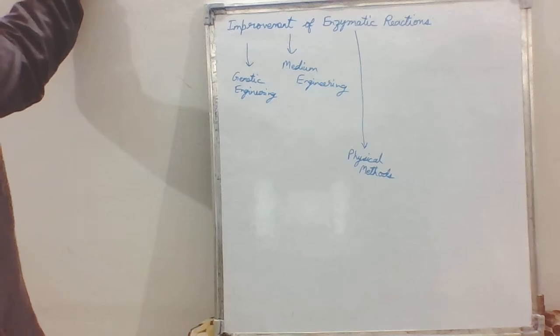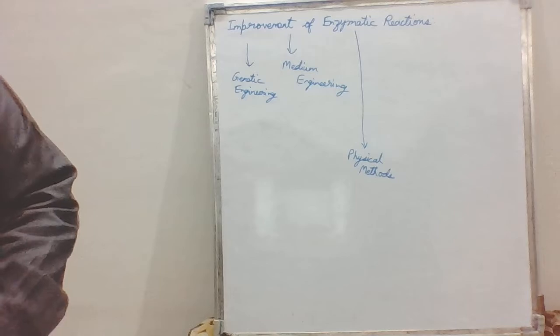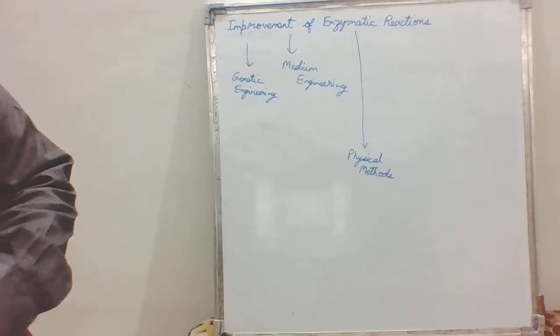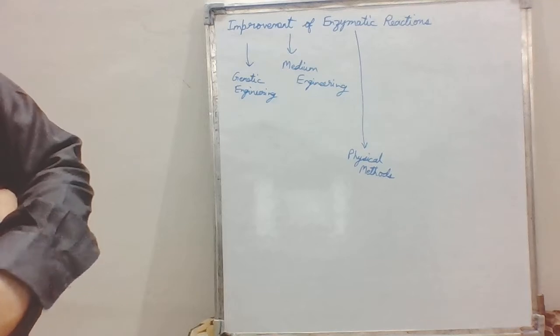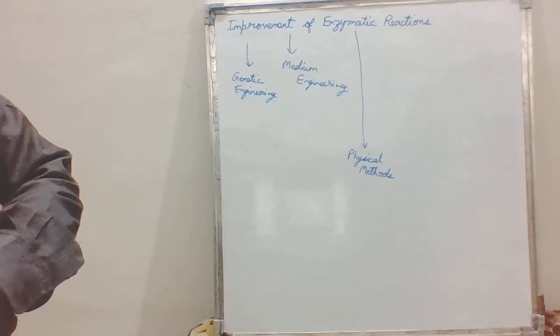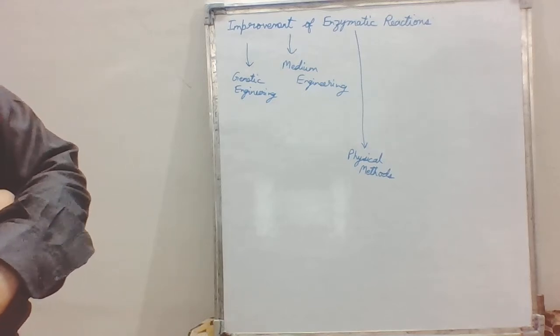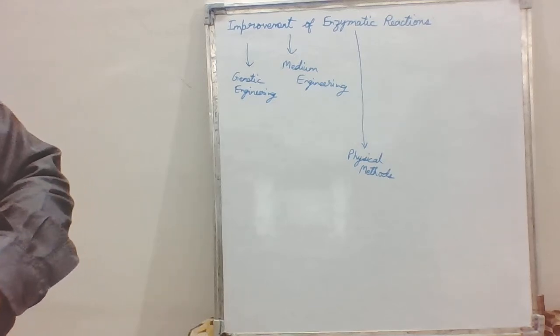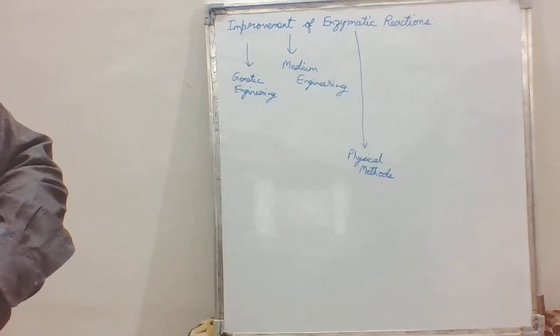To make enzymes more robust so that they can withstand a large range of temperature and pH, many methods are implemented. Another improvement is to intensify the enzymatic reaction, to increase the rate of enzymatic reaction so we can obtain higher conversions within a short period of time.